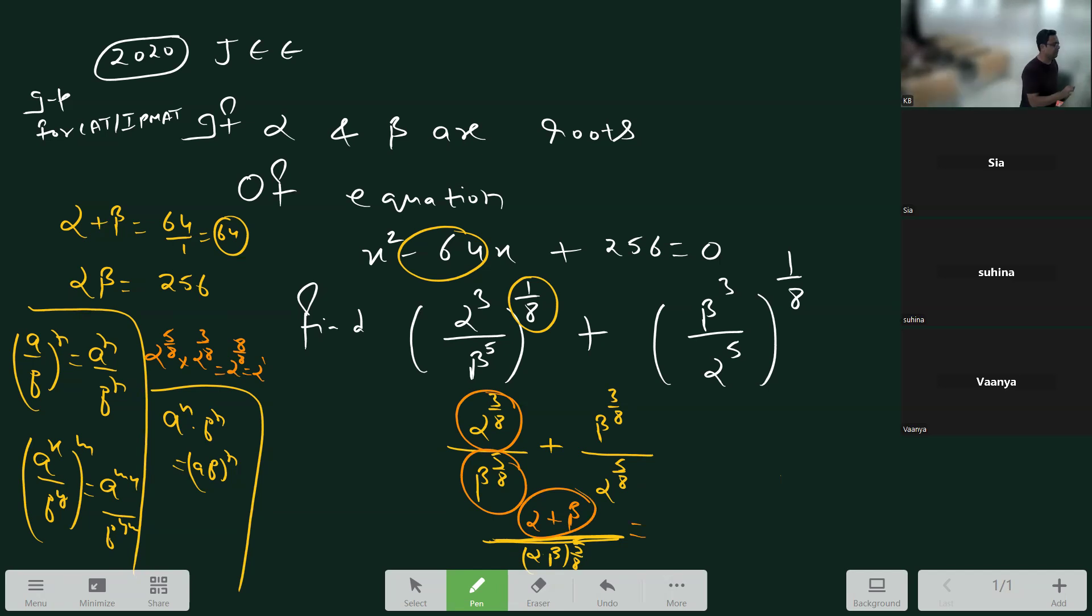Alpha plus beta we have now left is 64. Alpha, beta, what is the product?